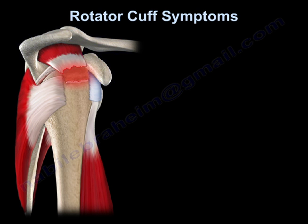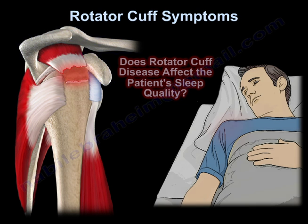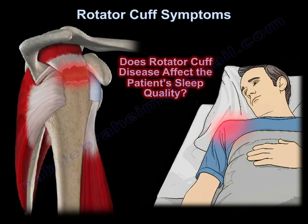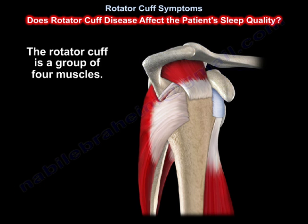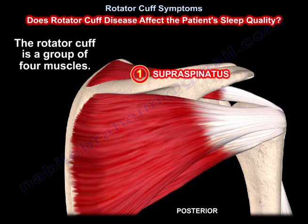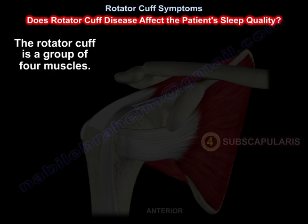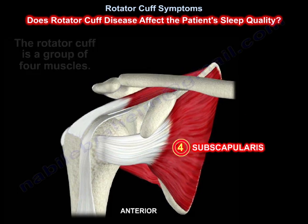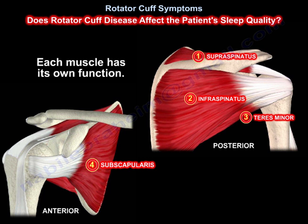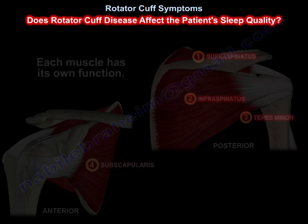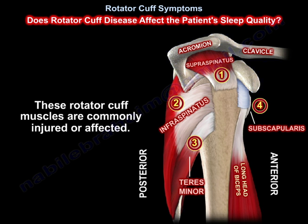Rotator cuff symptoms: does rotator cuff disease affect the patient's sleep quality? The rotator cuff is a group of four muscles: the supraspinatus, the infraspinatus, the teres minor, and the subscapularis. Each muscle has its own function. These rotator cuff muscles are commonly injured or affected.